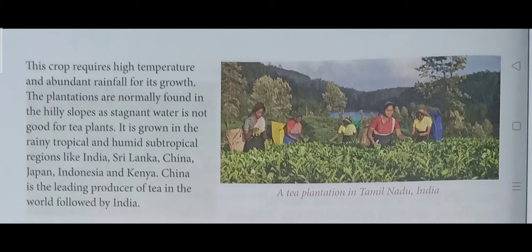Tea is grown in rainy tropical and humid subtropical regions such as India, Sri Lanka, China, Japan, Indonesia, and Kenya. China is the leading producer of tea in the world, followed by India. On the right-hand side of the picture, you can see a beautiful picture of a tea plantation in Tamil Nadu, India.